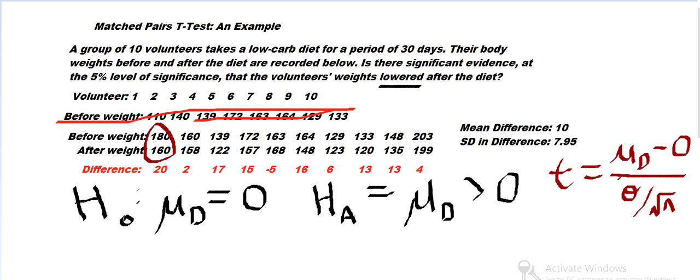So that's going to be, in this case, 10 running out of battery, 10 minus zero over 7.95 over square root of 10 here.